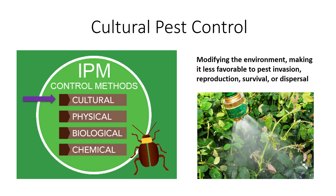Cultural pest controls complement other control options and are an essential component of IPM programs. Cultural controls are generally familiar, simple, and inexpensive, and they can often be incorporated into management systems with only minor modifications. Cultural pest control is most often used as a preventive pest management tool. To properly implement cultural control measures, it is essential to have a good understanding of crop and pest biology, ecology, and phenology, with special attention to weak links in the life cycle of the pest. I'm Dr. DeBosk, and in this video I will go over different types of cultural control practices.